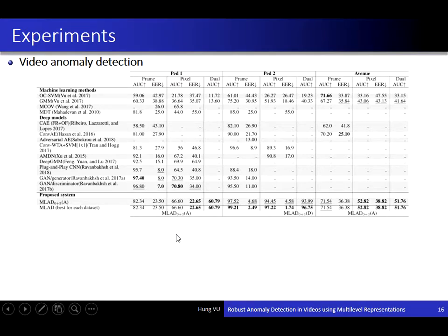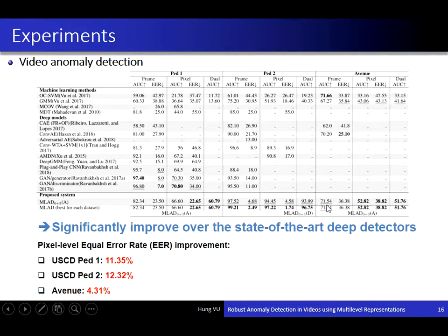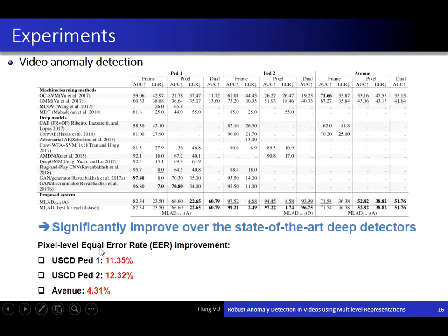We also compare our methods with state-of-the-art video anomaly detection approaches in the literature. This table shows that our methods significantly improve over the state-of-the-art deep detectors, with approximately 10% improvement in equal error rate at the pixel level for the best datasets, and 4% improvement on another dataset.